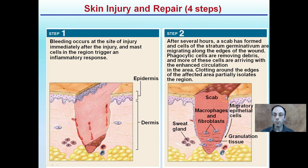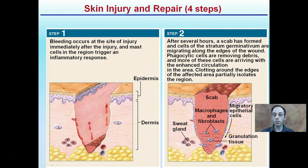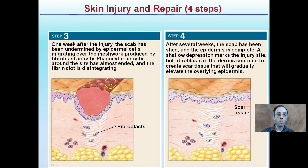Clotting around the edges of the affected area partially isolates the region. The body wants to limit bacteria from entering through the wound site, so it forms a scab to seal the region, increases blood flow to allow exchange of materials, and tries to isolate the area to limit potential for further damage.